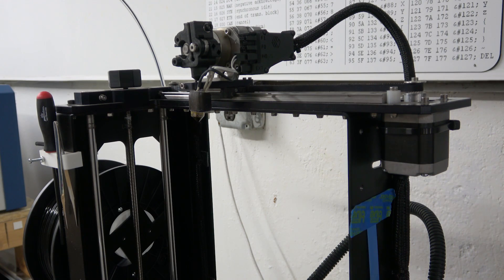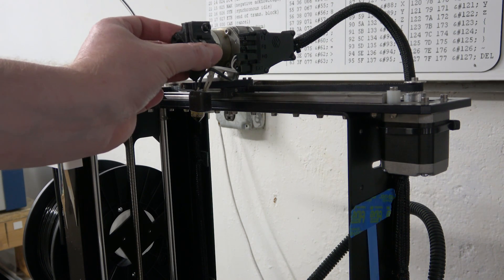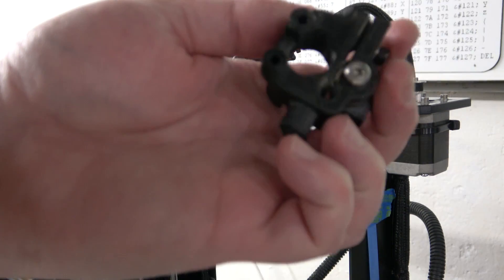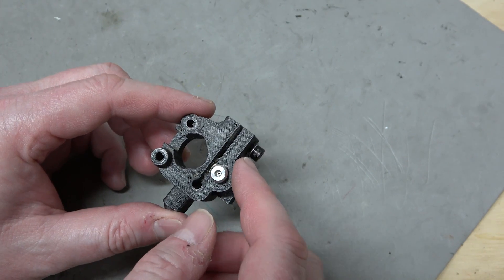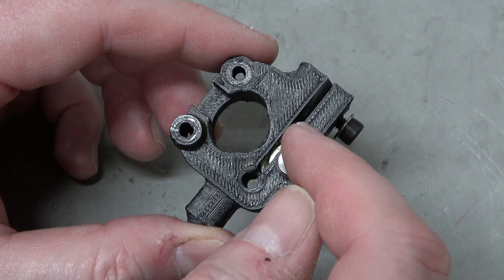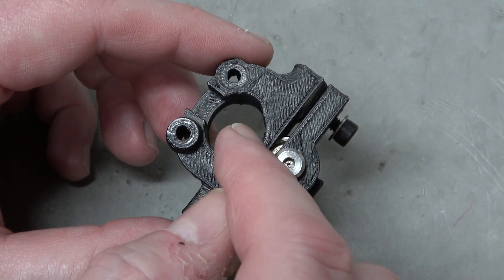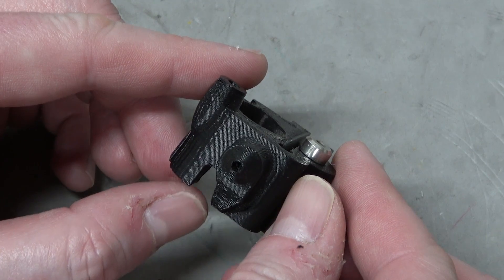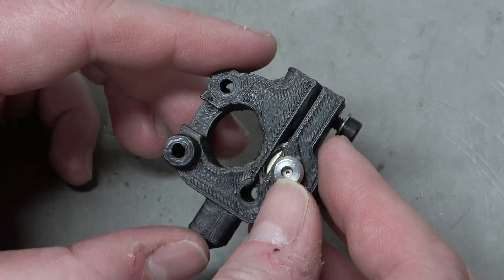Although there's one thing about it that I do not like and that is this extruder. So the purpose of this extruder is to hold the plastic tightly against the drive gear and push it into the hot end out through this nozzle.